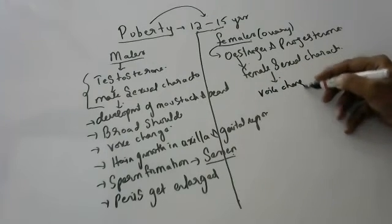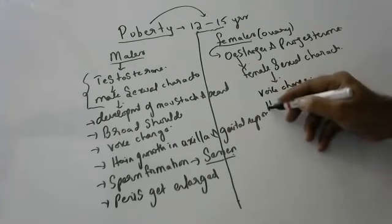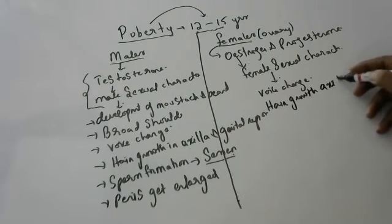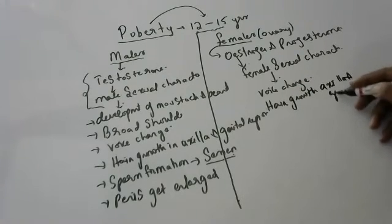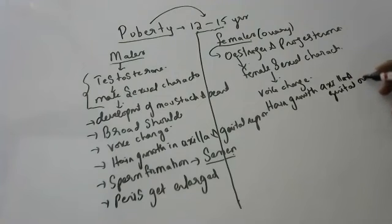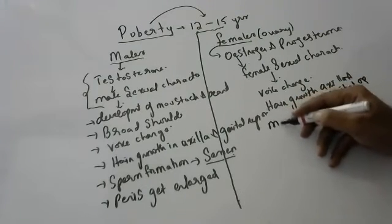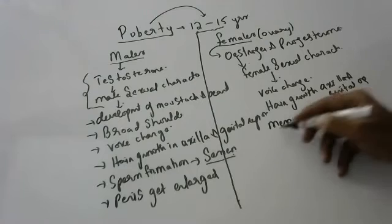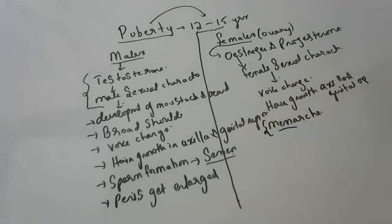Female sexual characters are voice becomes high-pitched children, and hair growth in axilla means armpit and genital organs. Menstrual cycle will start, and the onset of menstrual cycle is menarche. This is important, menstrual cycle will start.